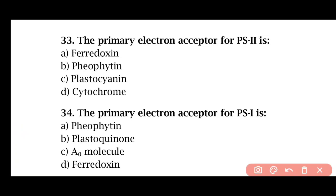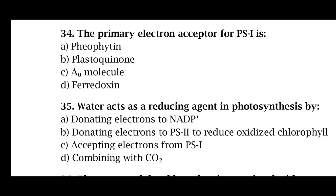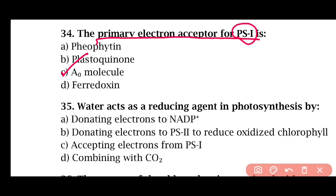Question 33: The primary electron acceptor for photosystem 2 is — ferredoxin, pheophytin, plastocyanin, or cytochrome. The correct answer is option B: pheophytin is the primary electron acceptor in photosystem 2. Question 34: The primary electron acceptor for photosystem 1 is — pheophytin, plastocyanin A, A0 molecule, or ferredoxin. The correct answer is option C. The A0 molecule, a special chlorophyll molecule, performs the role of primary electron acceptor for photosystem 1.